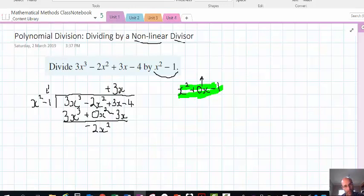3x minus negative 3x is 3x plus positive 3x is 6x.